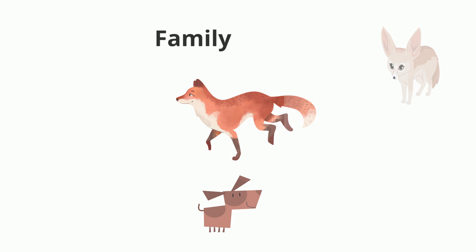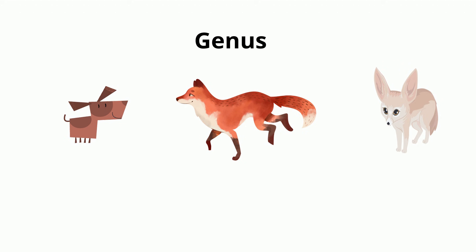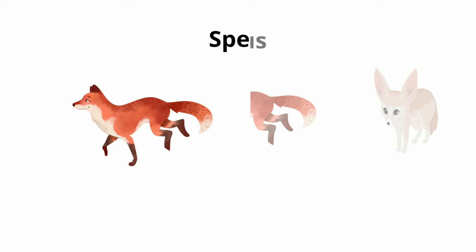Next is the genus. Foxes belong to the genus Vulpes, which means fox in Latin. Organisms that belong in this genus are often referred to as true foxes and are identified by the color difference between their tails and the rest of their bodies. This eliminates the dog, which belongs to the genus Canis.